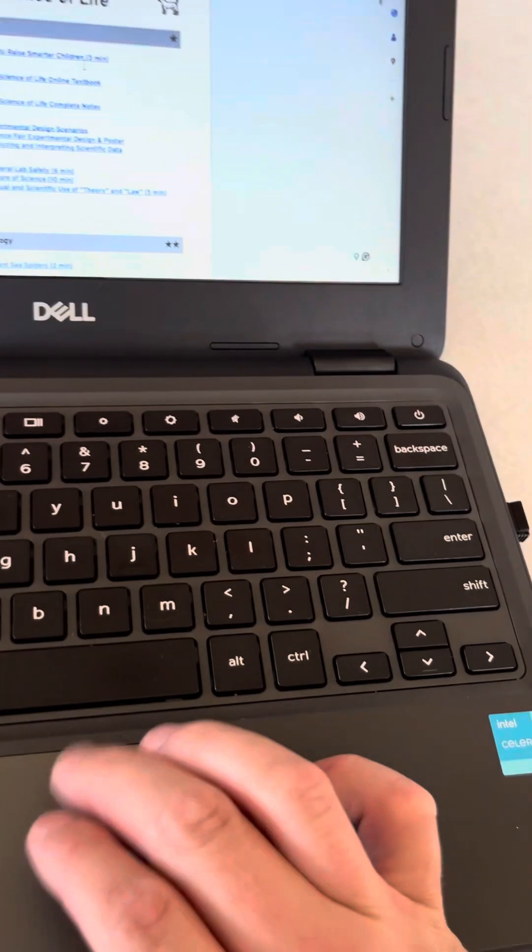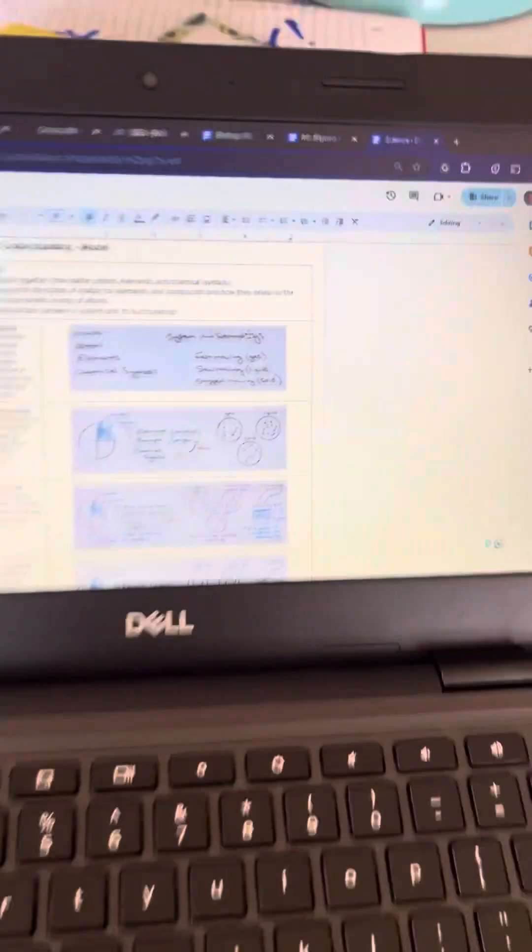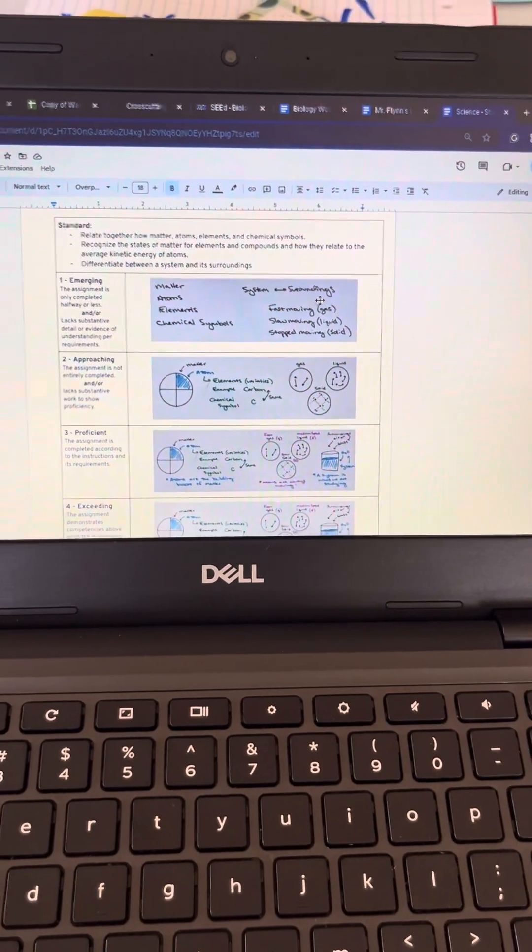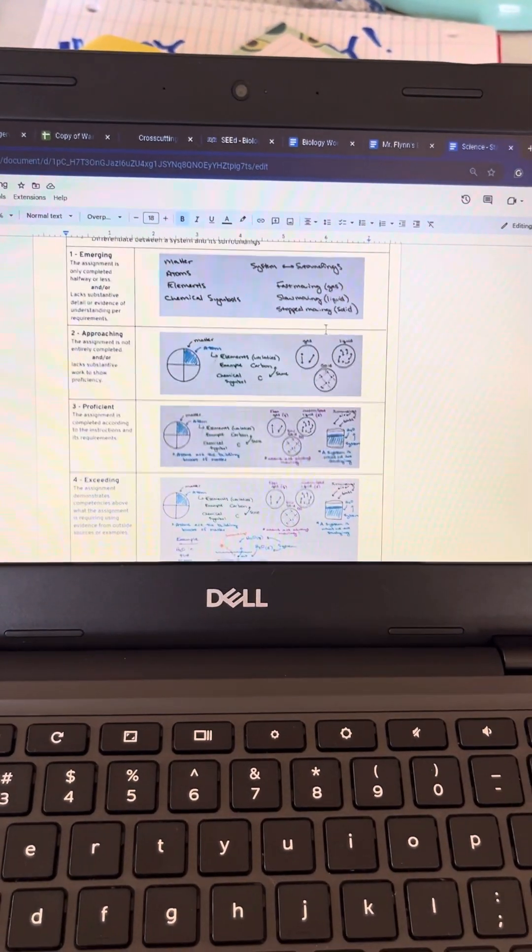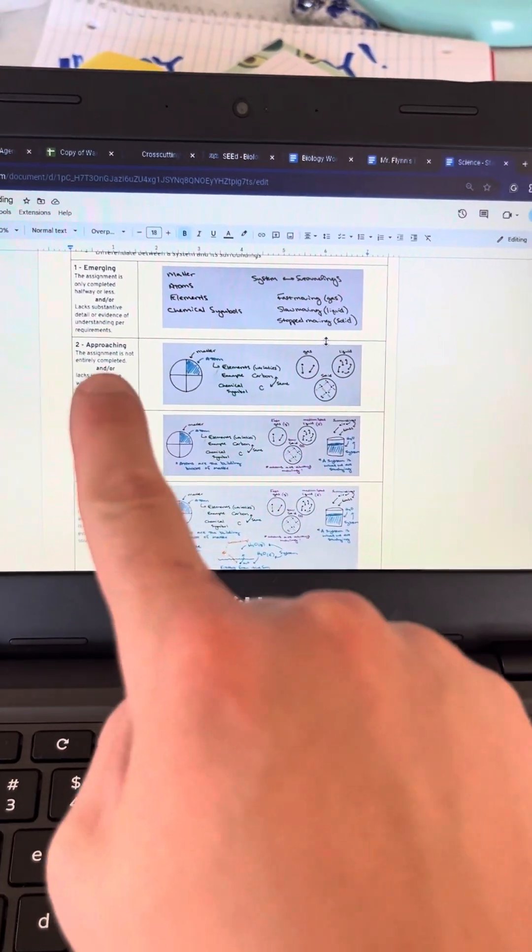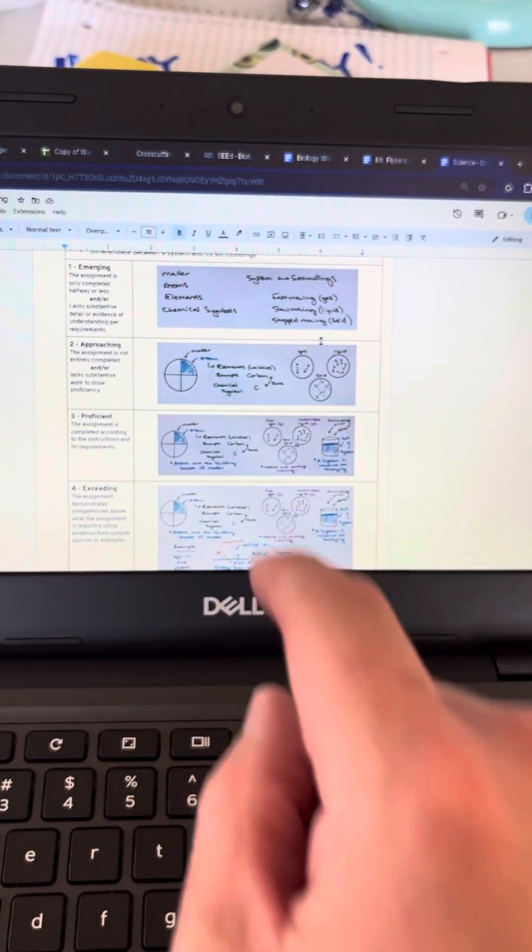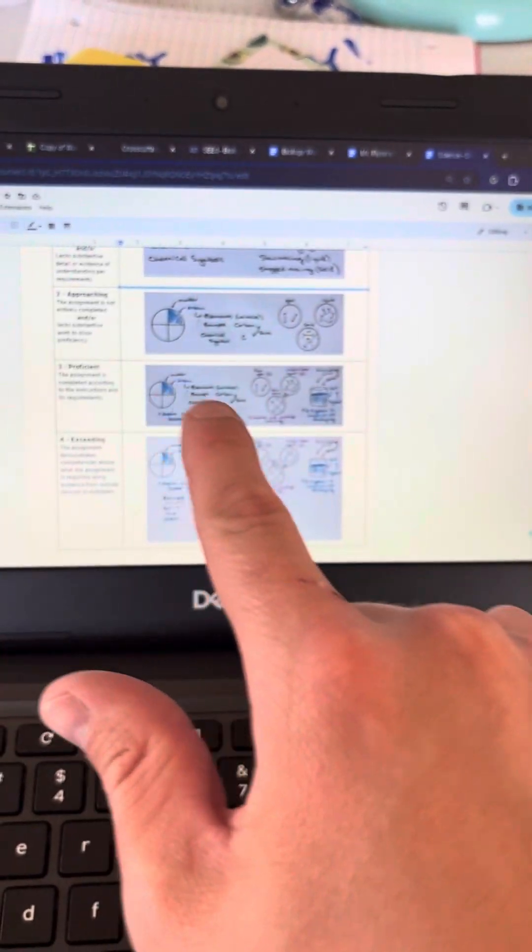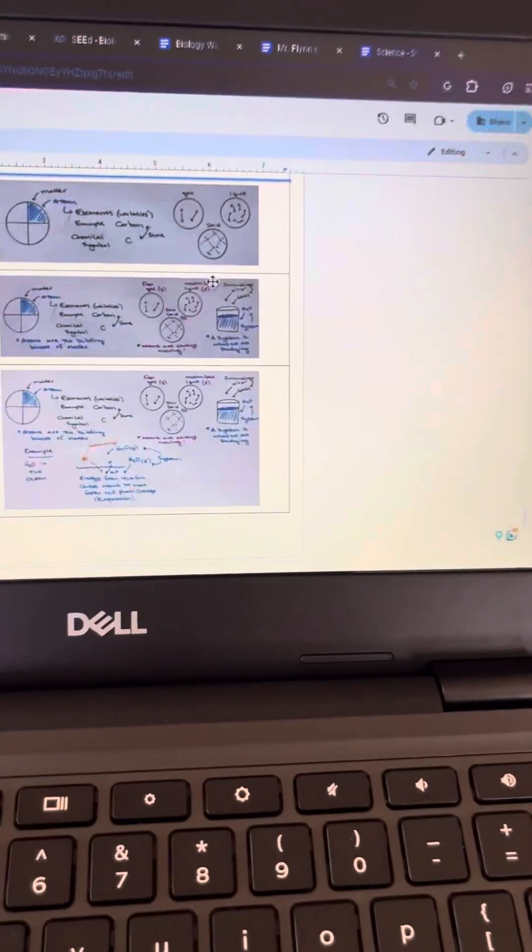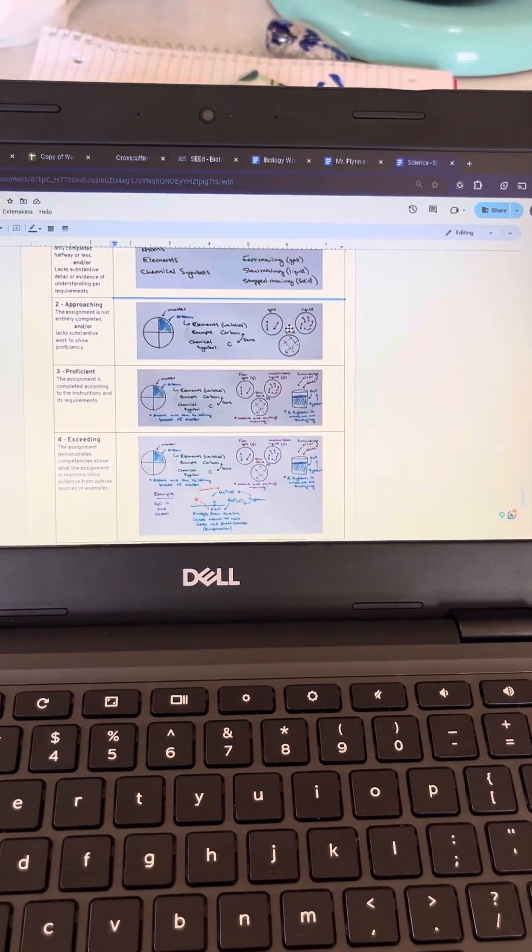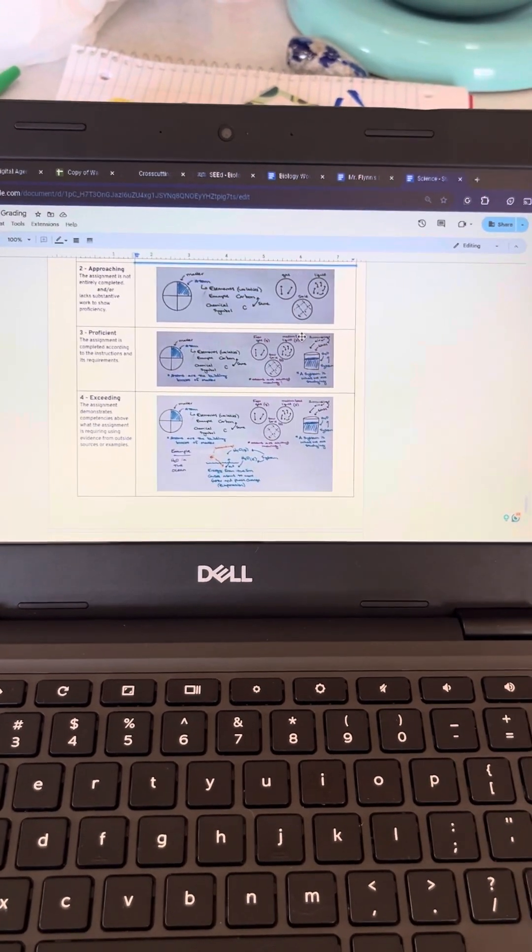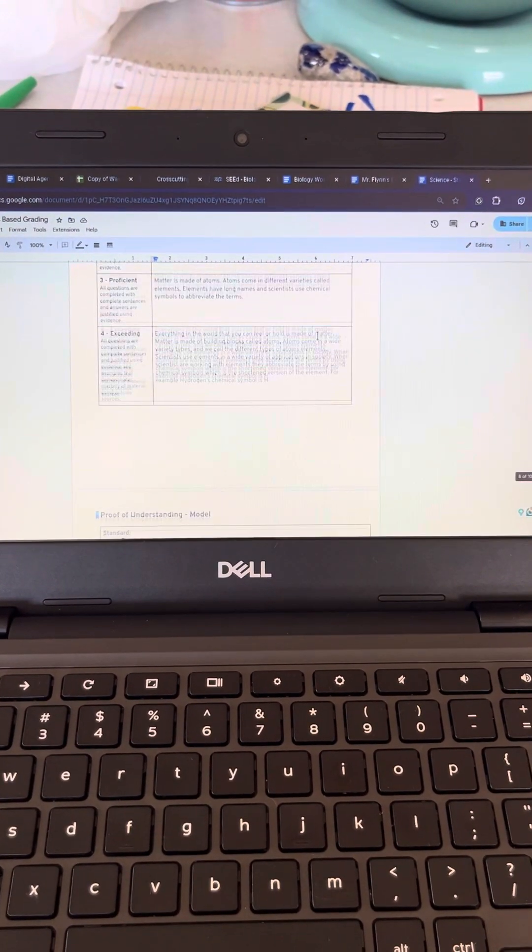I made this a long time ago and I have this in my class because kids need to know how to do a proof correctly. So I have emerging, approaching, proficient, exceeding. So emerging looks just like words. Approaching, they've got some of the material, but not all of it. Proficiency, they're showing me everything. And then a four is giving me that example of tying it all together. So I actually have models that show students what a one, two, three, and four look like.